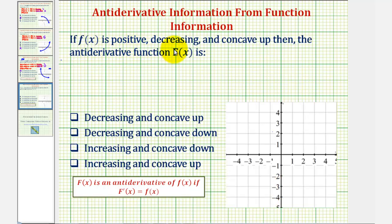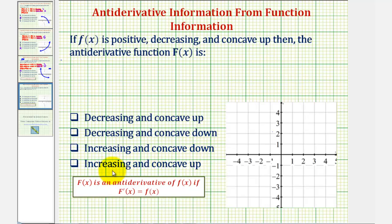If f of x is positive, decreasing, and concave up, then the antiderivative function big F of x is one of the following: decreasing and concave up, decreasing and concave down, increasing and concave down, or increasing and concave up.